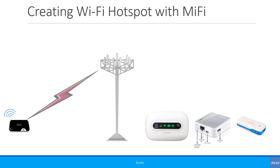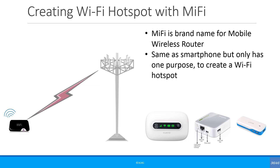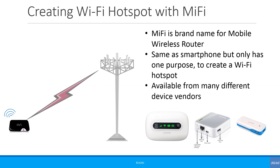An alternative to using a smartphone is a MiFi device. It is also referred to by different names such as mobile hotspot, router, or mobile Wi-Fi router. MiFi is just a brand name which was initially used by Novatel Wireless. It is understood to stand for My Wi-Fi or Mobile Wi-Fi. A MiFi device is the same as a smartphone but its only purpose is to create a Wi-Fi hotspot — hence you don't really need a large screen, cameras, or voice functionality. This device is available from many vendors. The picture below shows a dongle as well as a mobile Wi-Fi router.